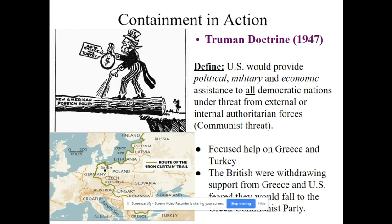Basically, anybody that's under communist threat — this could come from the Soviet Union directly, or it could be an internal threat from small rebel groups trying to rise up and take over a country, sort of the way Hitler did with Germany, Stalin did in the Soviet Union, Mussolini in Italy, Franco in Spain, and Tojo in Japan — kind of leading into World War II.